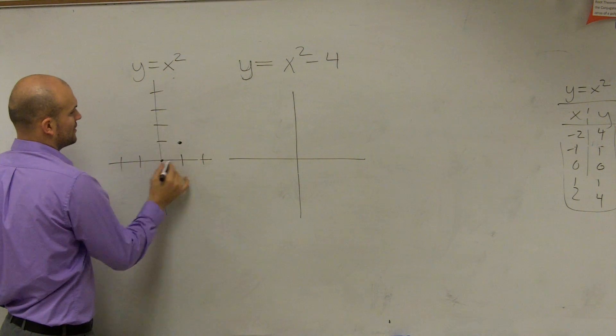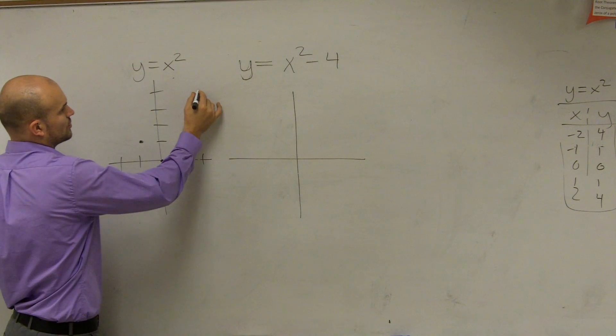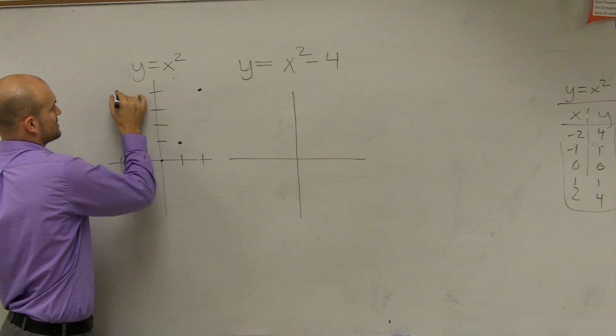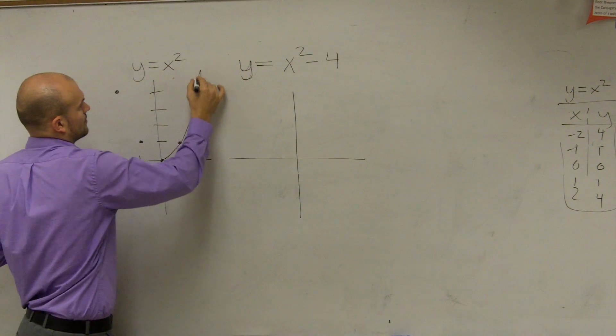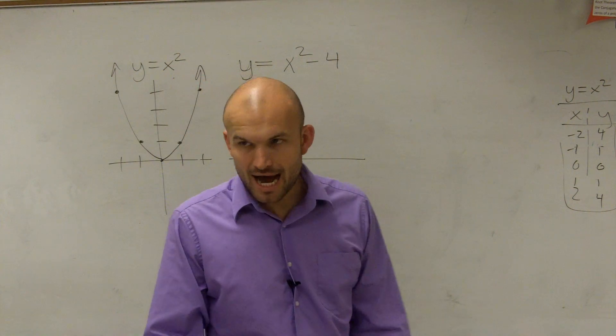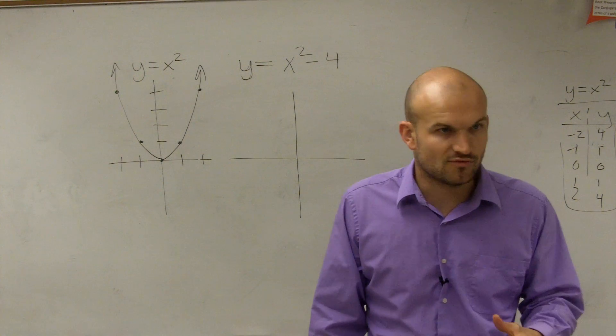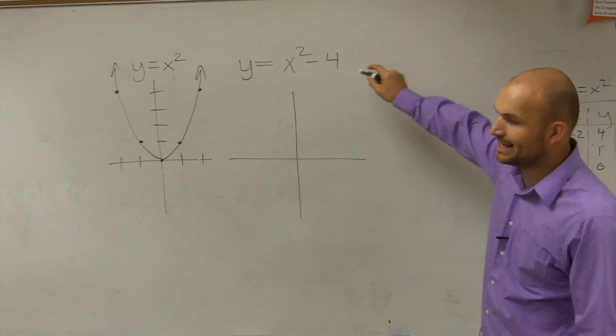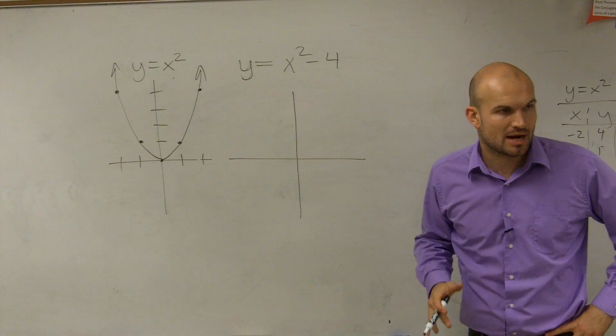the parent graph goes through these major important points. Okay, that's what we call the parent graph. Now we need to go back to our vertex form and say, what is 4 doing to our problem?